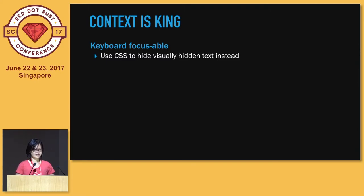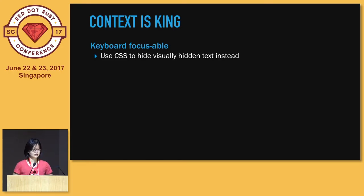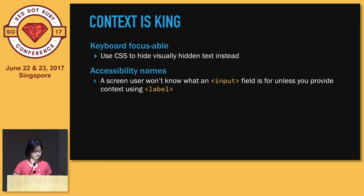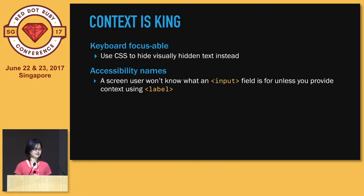Third, give context. If you want to display an element but don't want it to display text visually, hide it using CSS, but make sure that the text exists in your DOM. Screen readers can't focus on an empty element, so it might be skipping over important content you want to tell your user. The same goes for elements without names or labels.